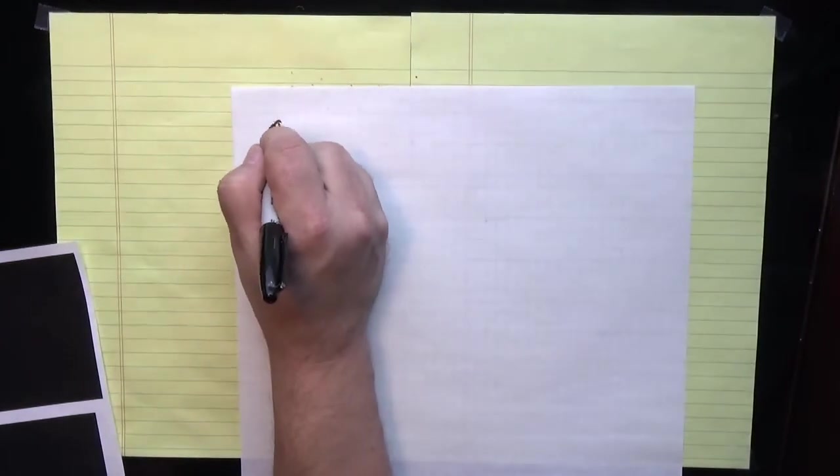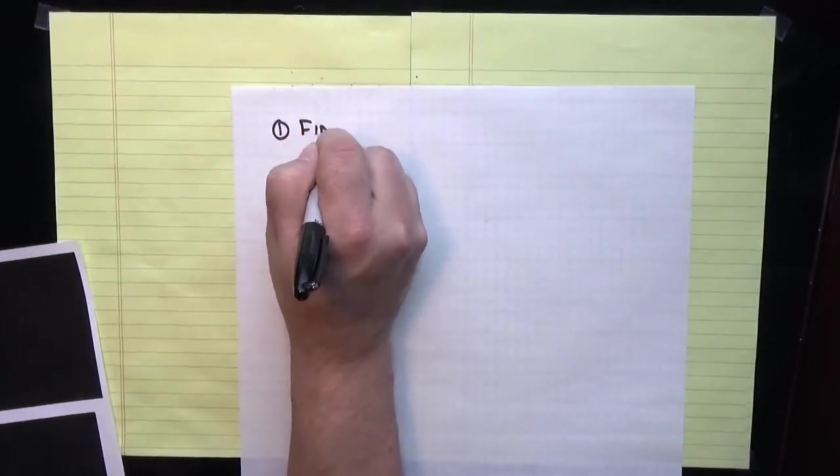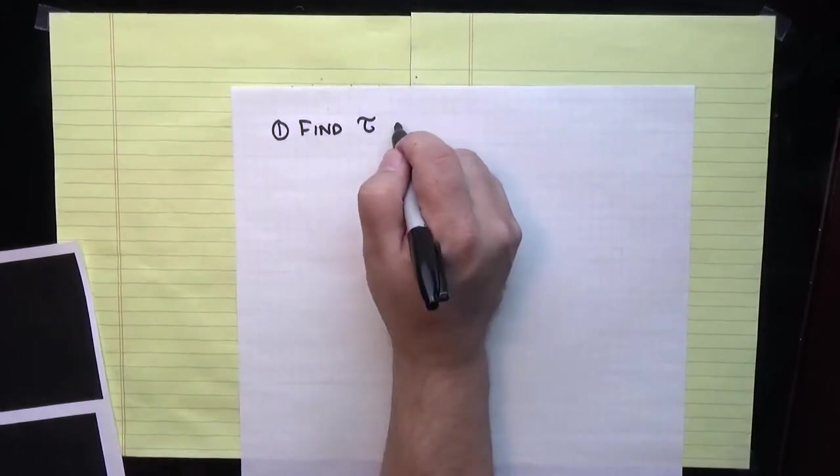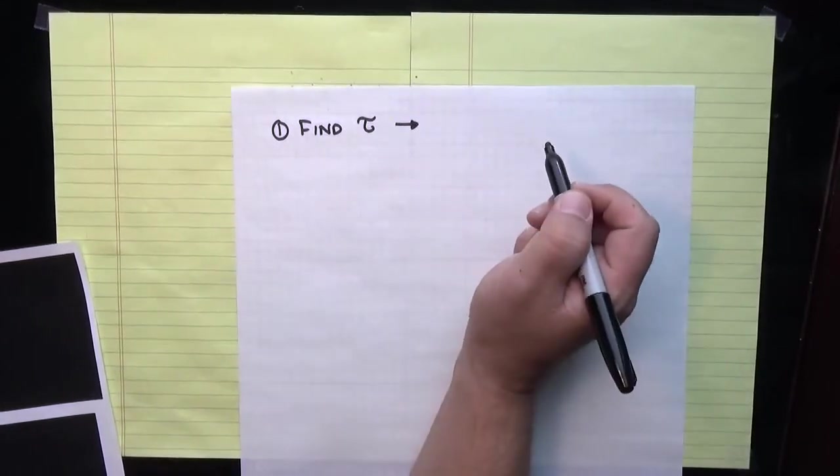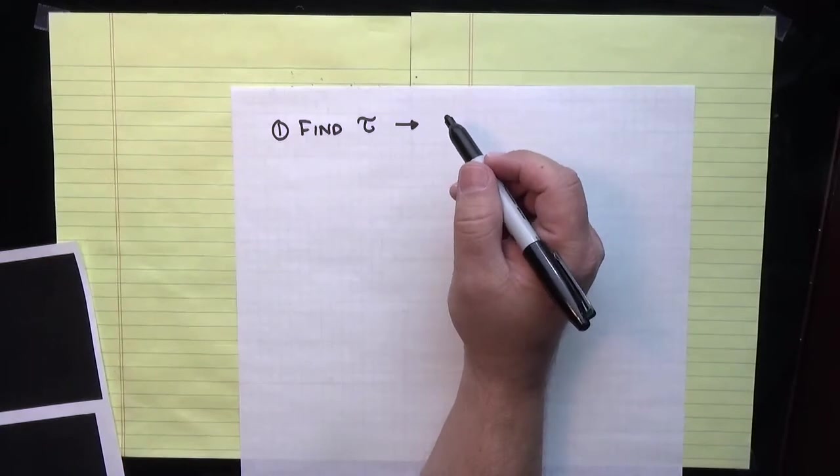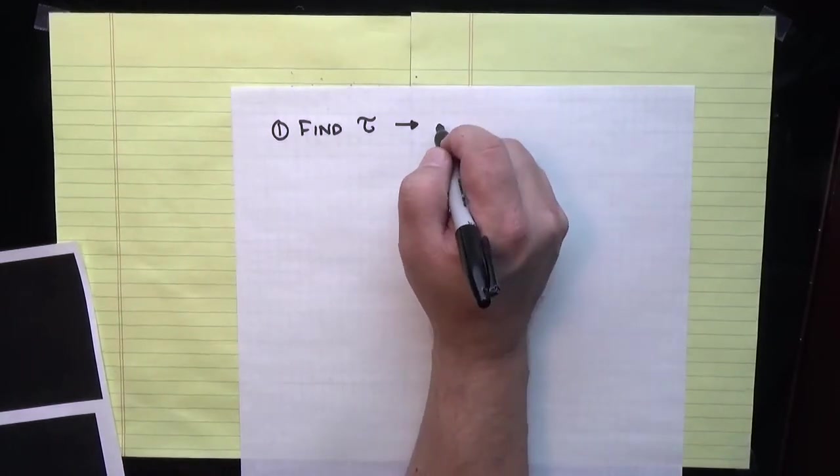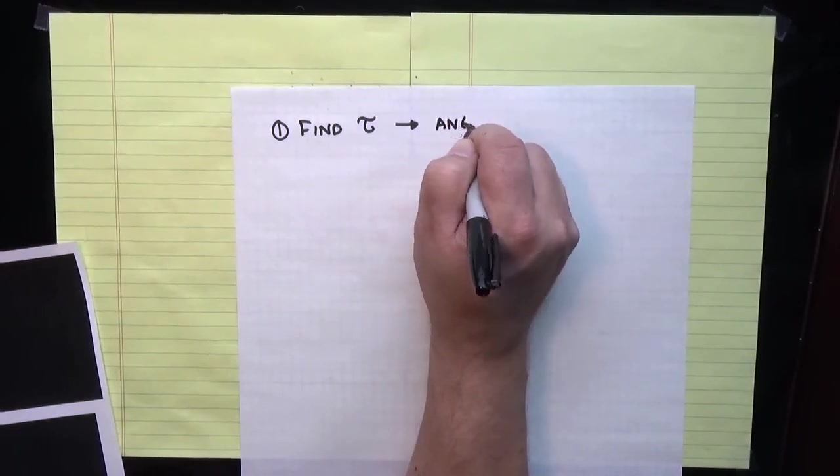Then we're going to use that torque, together with the information given about the spindle, about the spool that the tether is wrapped around, to find the angular acceleration.